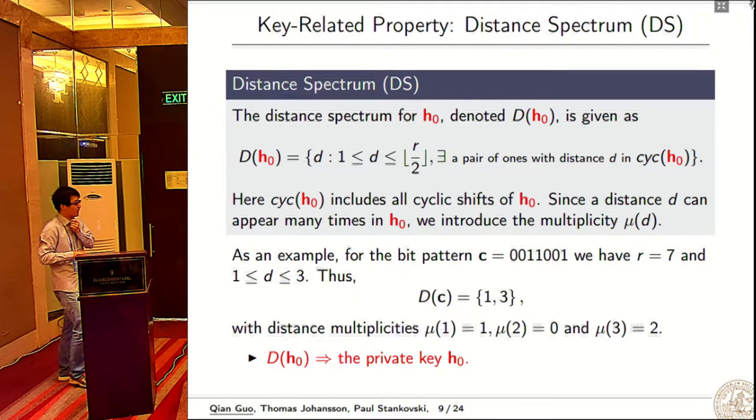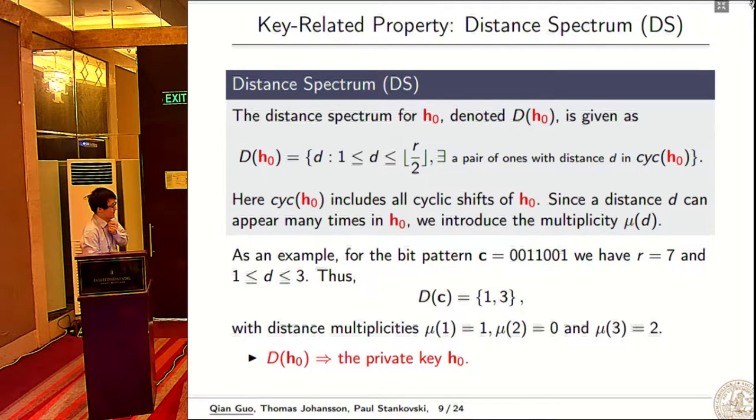The distance can appear many times in this vector in h0, so we also introduce some multiplicity. This is an example. If we have this bit pattern, we have r is 7, the possible distances are 1, 2, 3. For distance 1, since we have the pattern 1,1, the multiplicity is 1. We don't have the pattern 1,0,1, so this is 0. But we have 1,0,0,1 and also with a shift, so the multiplicity is 2. The distance spectrum is 1, 3.